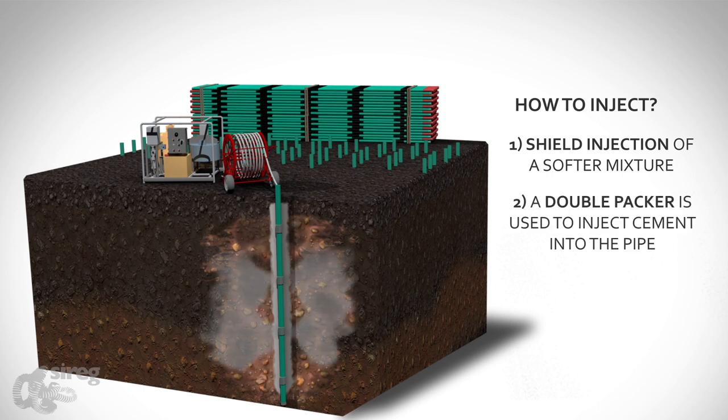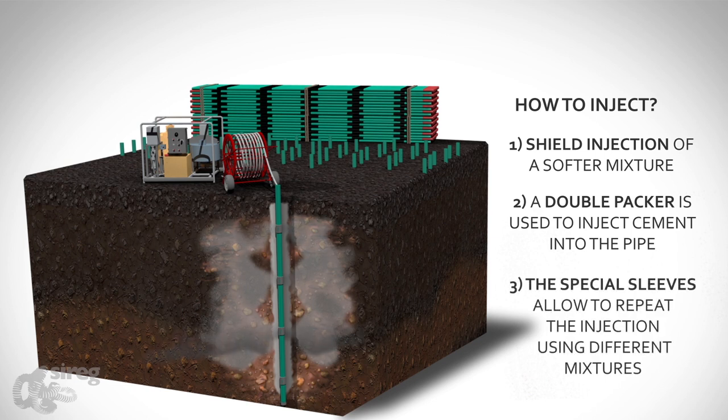Then, a double packer is used to inject cement through the pipe. The special sleeves in the pipe prevent the grout from coming back into the pipe and allow to repeat the injections using different mixtures as required.